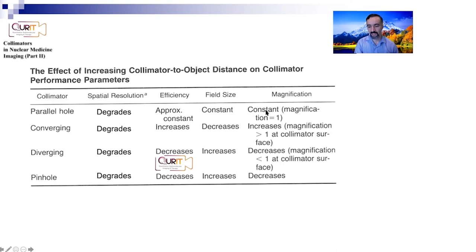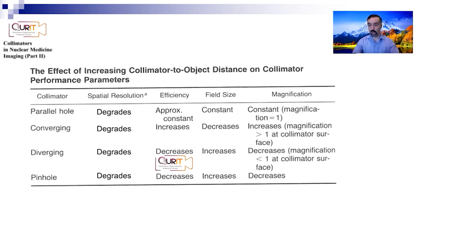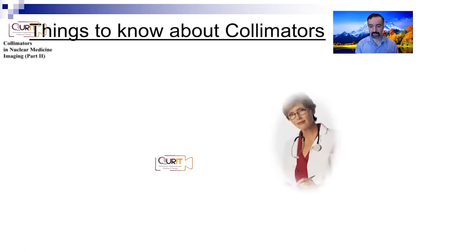Looking at magnification: it remains constant for parallel hole, increases for converging, and decreases for diverging. By 'decrease' we mean it becomes less than one - the minification factor is actually increasing. So as you get further and further away with a diverging collimator, magnification becomes smaller and smaller, meaning a larger object can be projected onto a smaller detector.